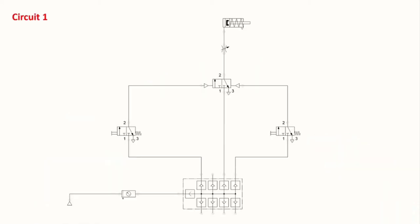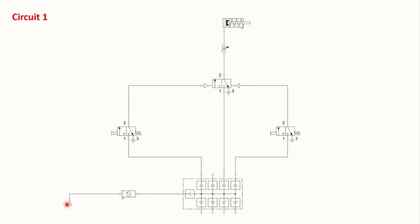Let's look at the first circuit. Similar to any other circuit we design, we have air supply, an air service unit, and a manifold distributing air between the signaling elements and the control element. We have two directional control valves as signaling elements and one controlling this throttle valve, which in turn controls the single acting cylinder.